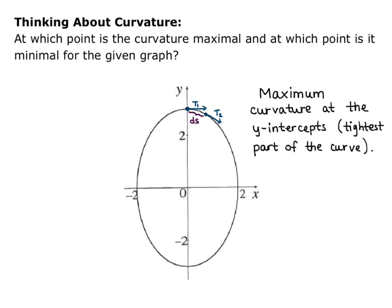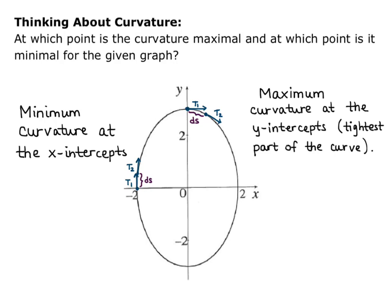For minimum curvature, at the negative x-intercept (−2, 0), I draw unit tangent vector T₁ pointing up. Moving the same small distance ds along the curve, T₂ is also nearly vertical — the unit tangent has not changed direction much over that same arc length. So minimum curvature is at the x-intercepts, the straightest part of the curve. Intuitively, curvature is maximum at the tightest part of the curve and minimum at the straightest part.